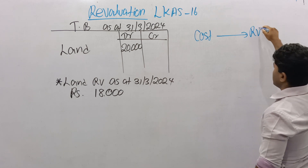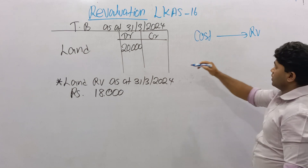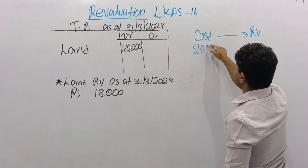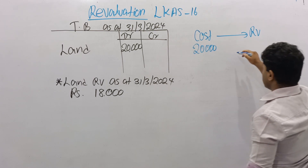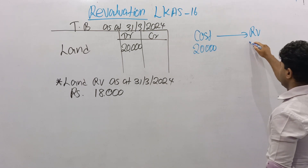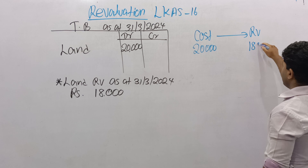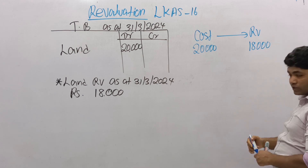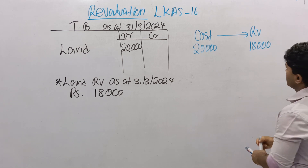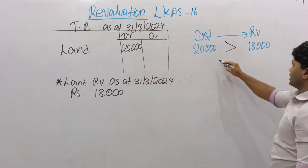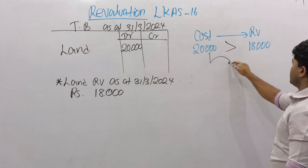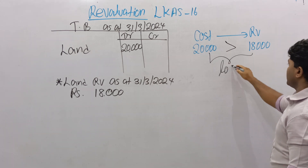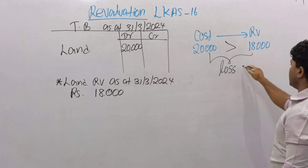Compare the asset revaluation amounts. The land cost value equals 20,000. This is the first time revaluation. The given revaluation amount equals 18,000. Therefore, the revaluation amount is lower than the cost value, and the difference value should be considered as a loss.